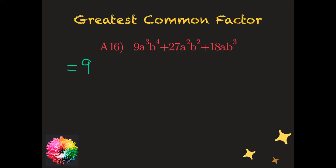Then I move on to the variables. I have a³, a², and a¹ — meaning the first term has three a's, the second has two, and the third has one. The greatest common number of a's across all three terms is the variable with the smallest exponent, which is a¹. We do the same with the b's: b⁴, b², b³. The term with the smallest number of b's is b², so our overall greatest common factor is 9ab².